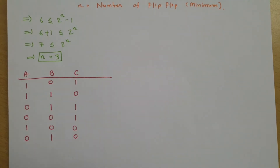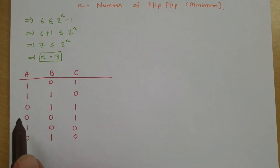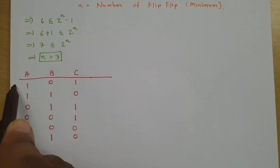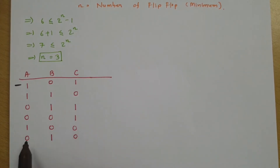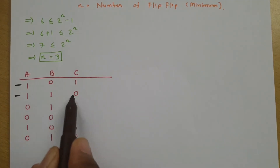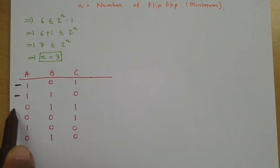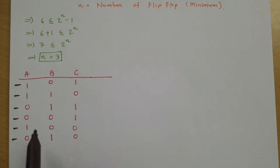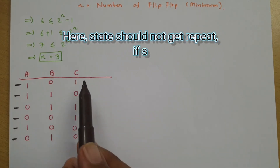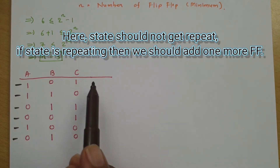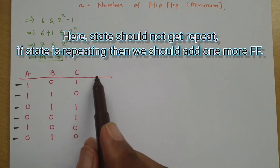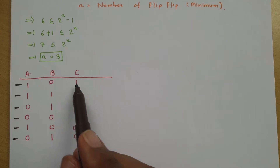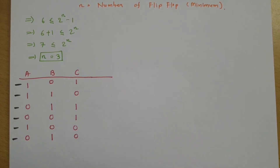Now we need to identify whether any state is getting repeated. Checking 101 — that is not repeated in any other state. Checking 110 — not repeated. Checking 011 — not repeated. Checking 001 — not repeated either. So no state is repeating, which means we don't need to add any additional flip-flop. If any state were repeating, we would need to add one more flip-flop.